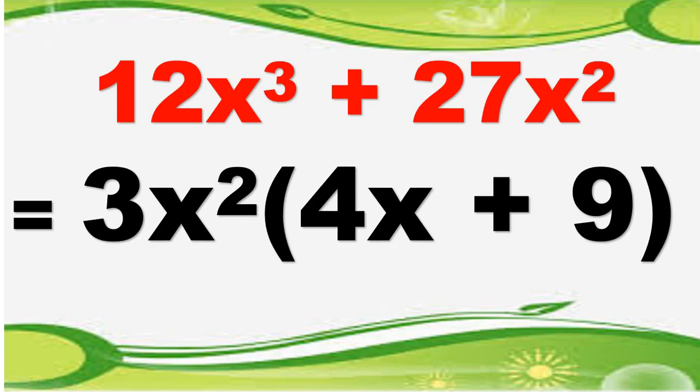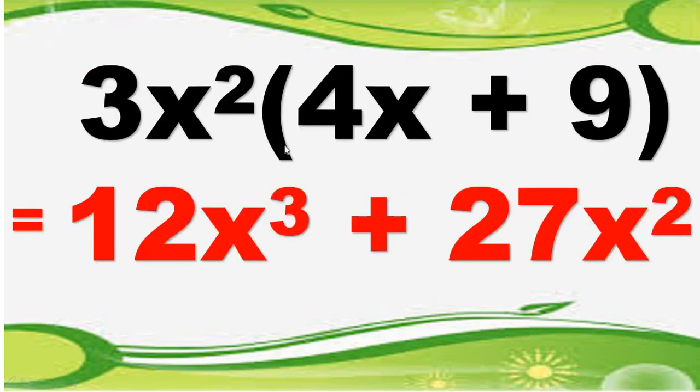Then check your answer by applying distributive property. Your answer is 3x squared multiplied by 4x plus 9. So by distributive property, 3x squared multiplied by 4x, the result is 12x cubed. So this time, 3 times 4 is equal to 12, x squared times x is equal to x cubed.